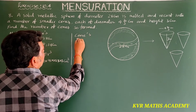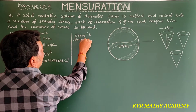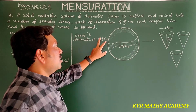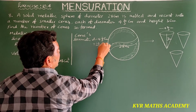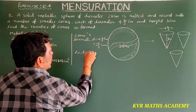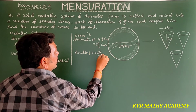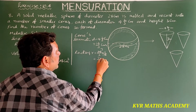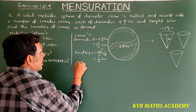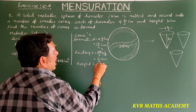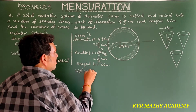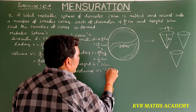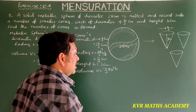For the cones: diameter d = 4⅔ centimeters = 14/3 centimeters. So radius r = 14/3 × 1/2 = 7/3 centimeters. Height h = 3 centimeters.